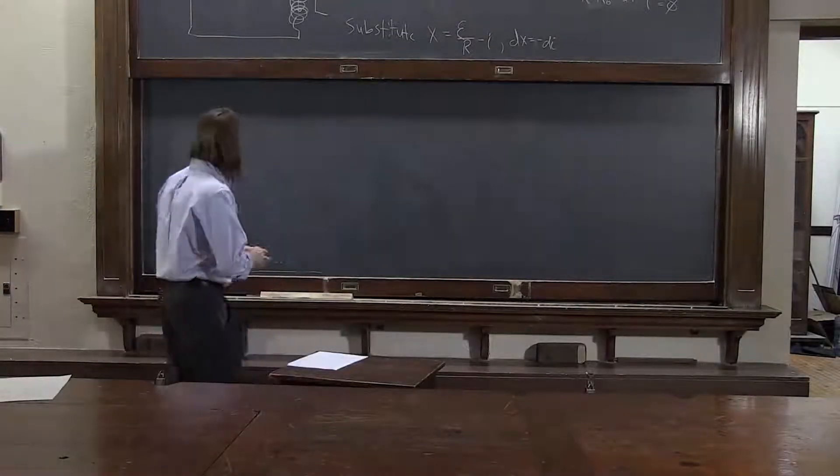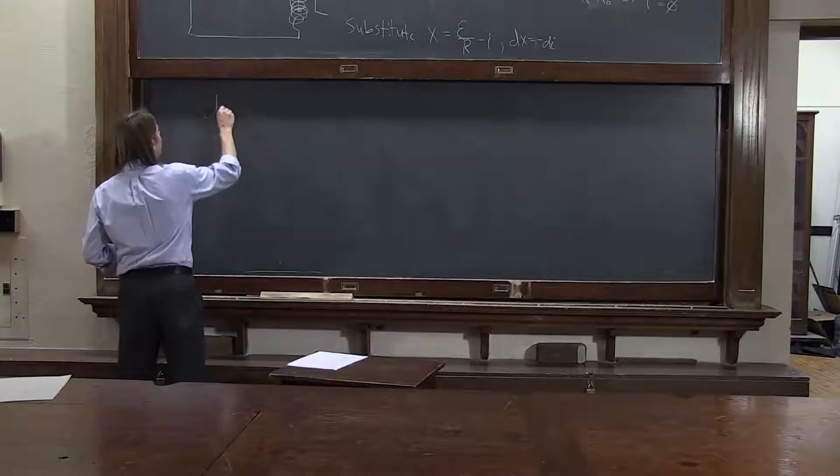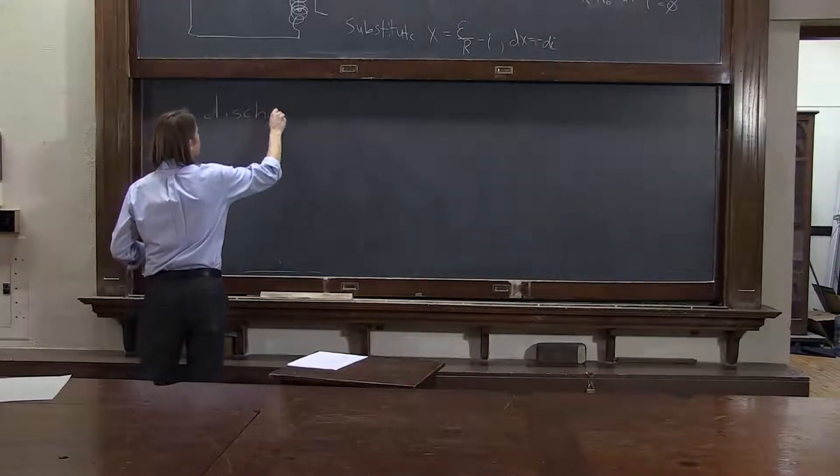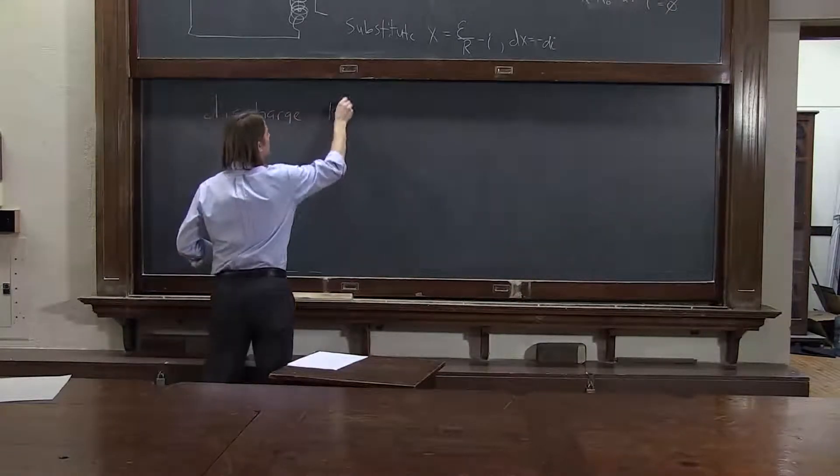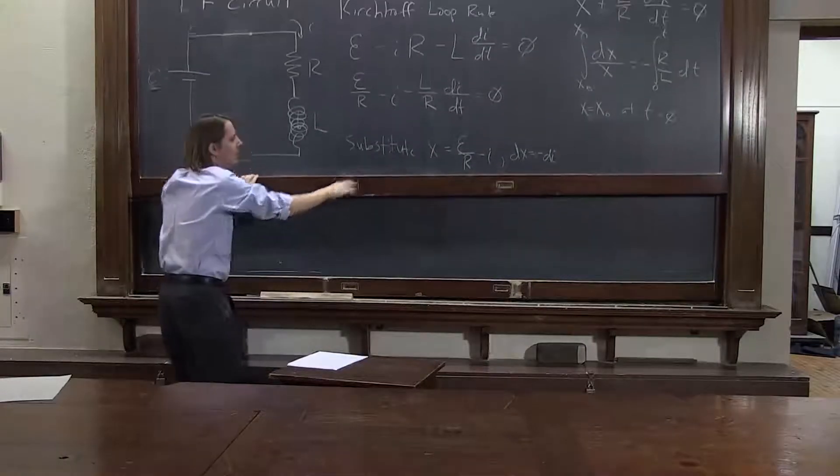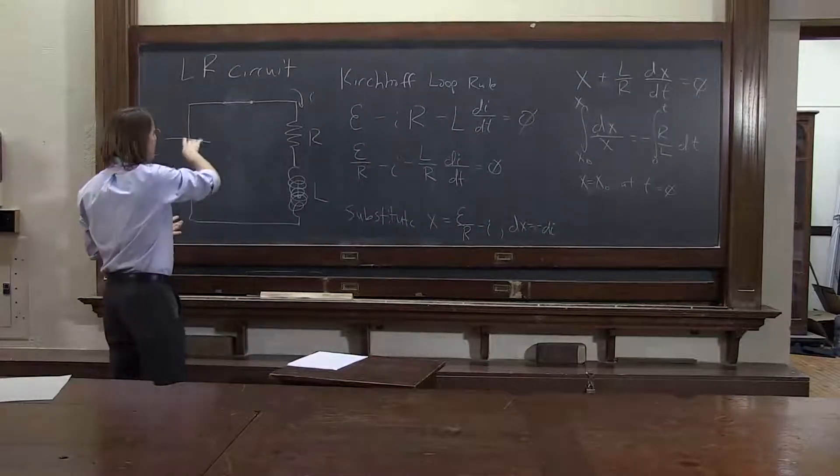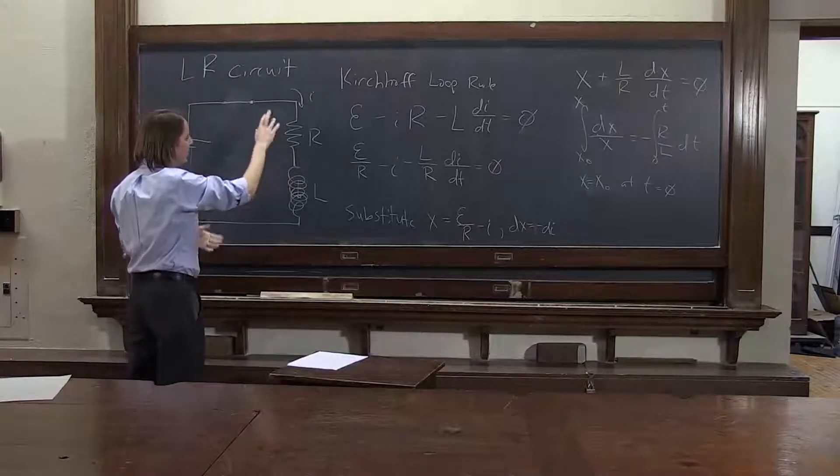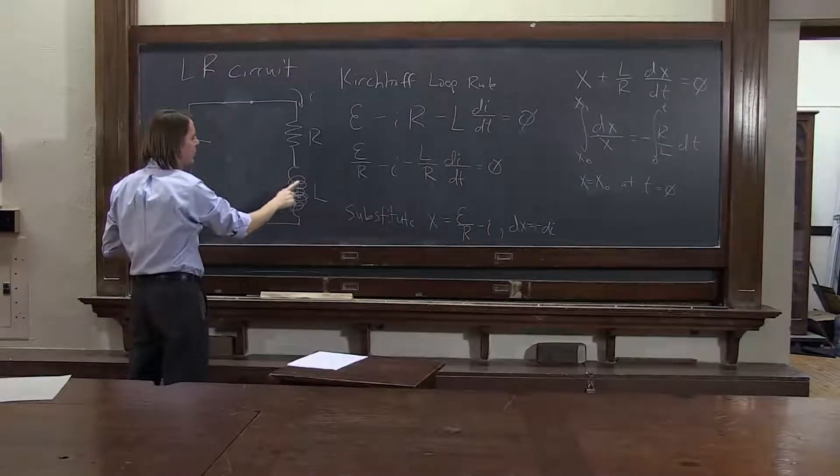We have our nice B field in our inductor. Now let's discharge the RL. So let's look at the circuit again. It was like this. The battery caused current to flow. We reached a steady state where there's nice current going through the inductor.